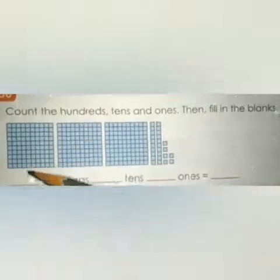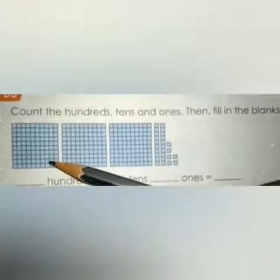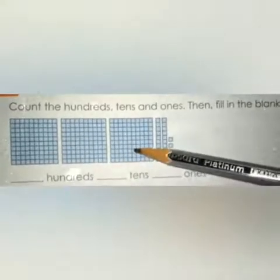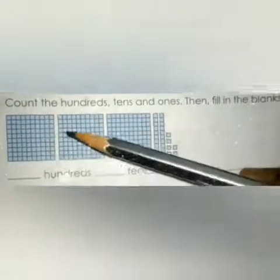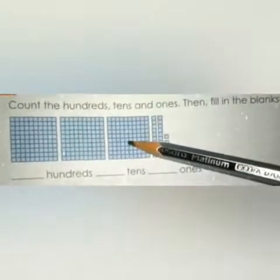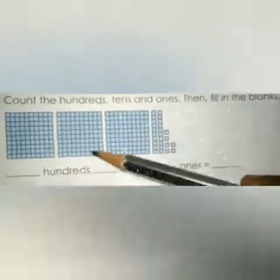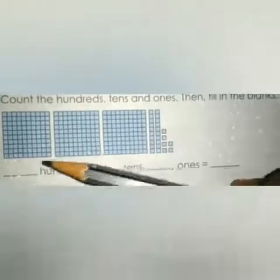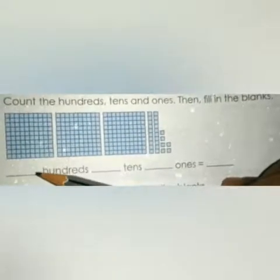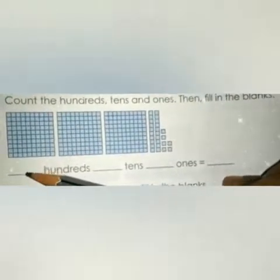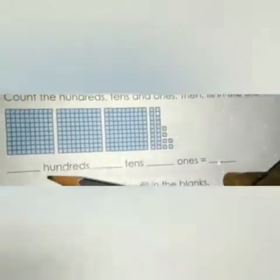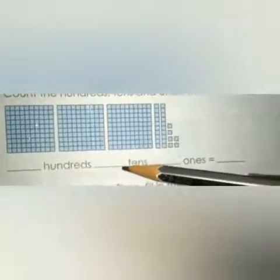Look here, children. This grid consists of one hundred blocks. There are three grids — one, two, three — so three times one hundred. You have to write three in the hundreds place — not three hundred written out, but just three, because the word hundreds is given here. So three hundreds.